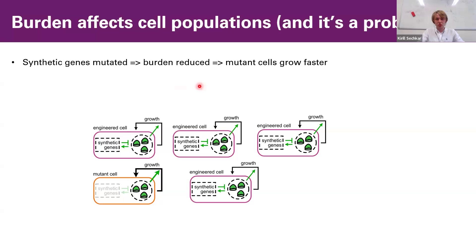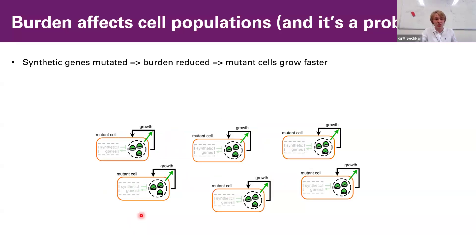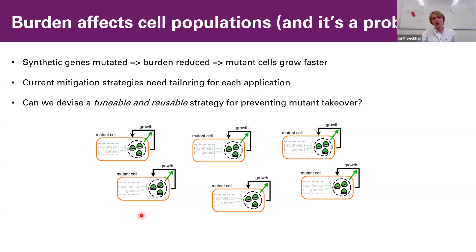Now let's move on to use this kind of model for a more complicated case of circuit design — the problem of mutation spread. Synthetic genes impose a burden on the cell and slow down cell growth. So when the synthetic genes are mutated, we have a mutant cell which grows faster; eventually mutant cells, dividing faster, will outgrow and outcompete and displace engineered cells from the population. This is a major limiting factor for the productivity and functional lifespan of engineered cell populations. Some prior techniques like overlapping synthetic genes with genes essential for cell growth have been proposed, but all these need to be tailored and re-implemented in DNA for each particular application.